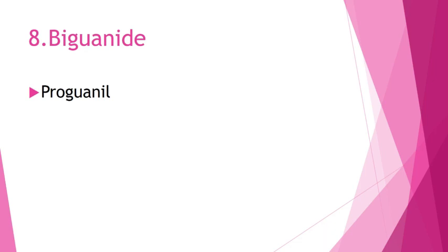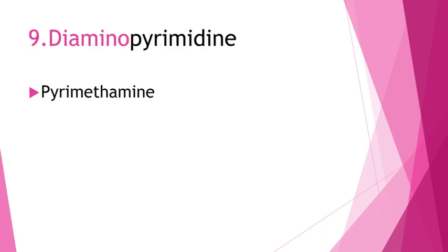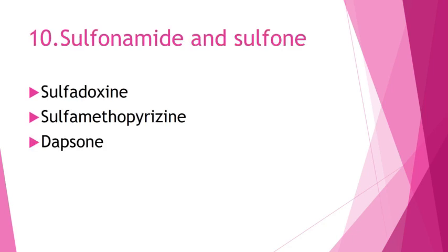Biguanide class: the example drug is proguanil. For diaminopyrimidine — ninth class — the example is pyrimethamine.